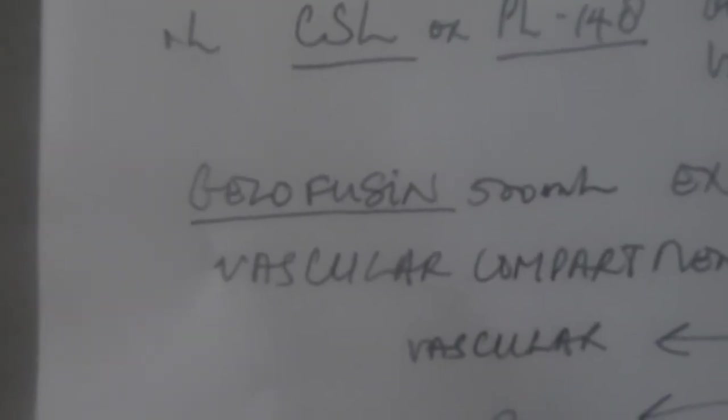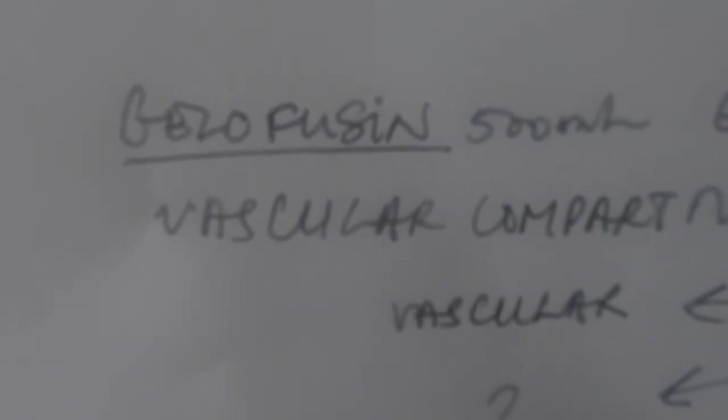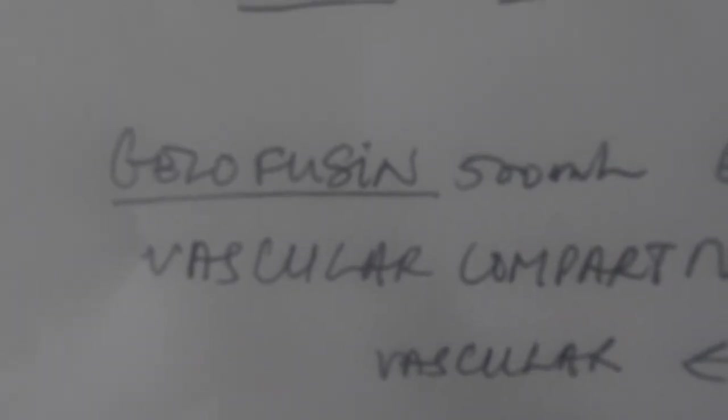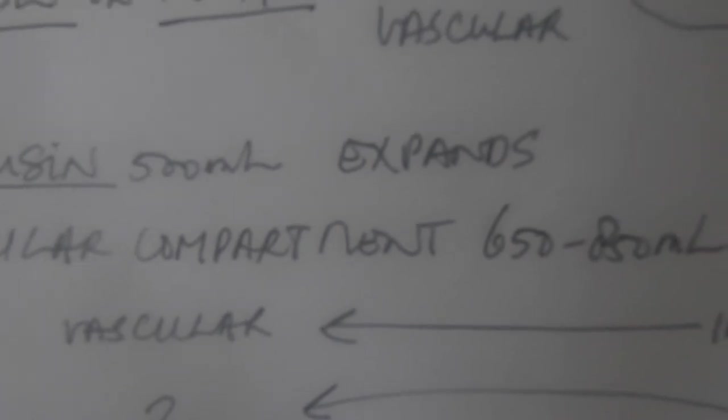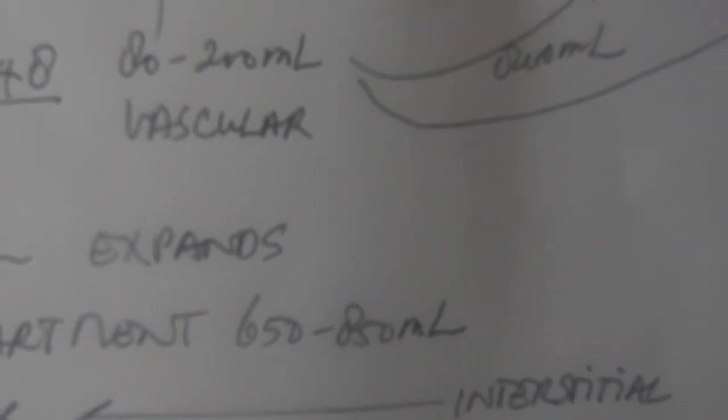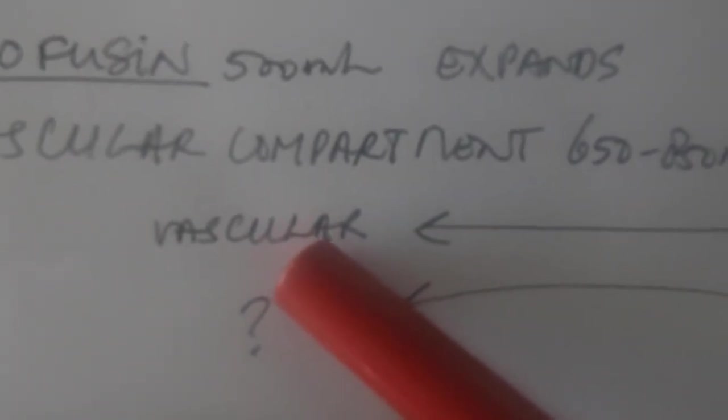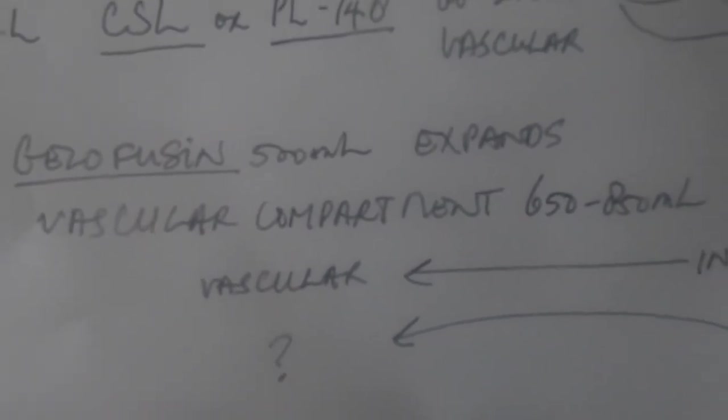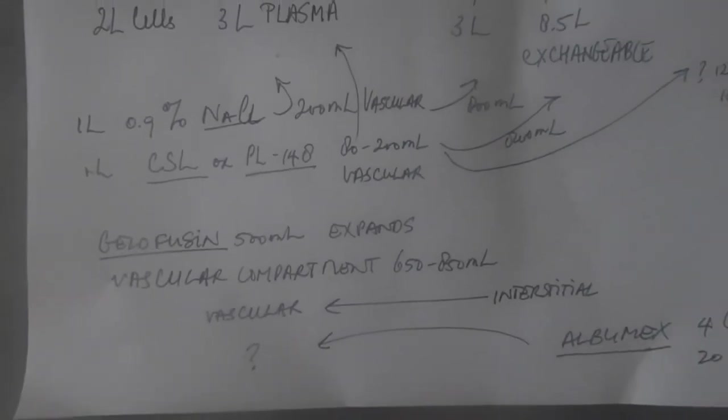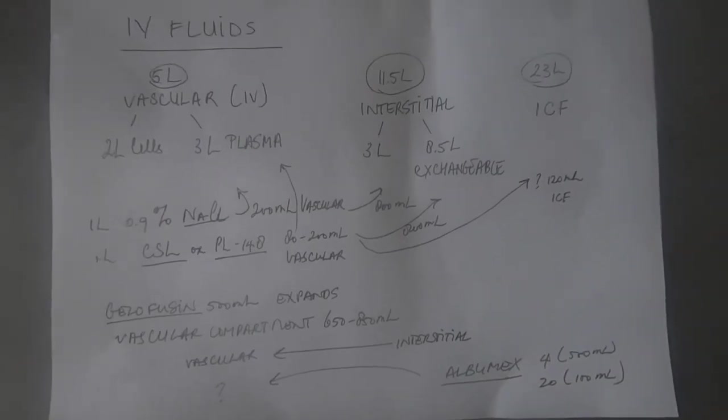With that 500 mil bag of Gelofusion, we see an expansion of about 650 to 850 mils of fluid coming from the interstitial area and shunting into the vascular space.